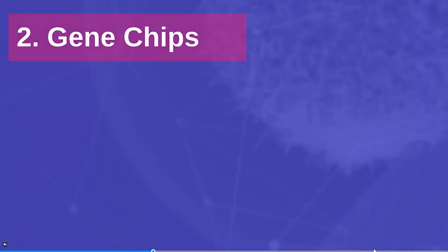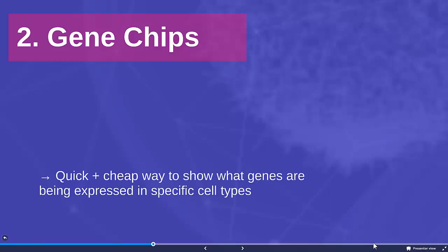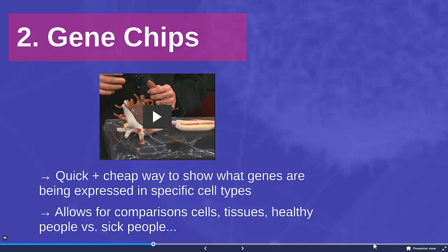Another way to figure out what a gene is doing is using something called a gene chip. This is a really quick, cheap way to figure out which genes are being expressed in specific cells. Gene chips can also be used to compare healthy people and sick people and understand which genes are being expressed in the healthy person versus the sick person — and maybe gene expression is the reason for a particular disease. This video will give you a simplified but good visual for how gene chips might work and how you can see visually quite quickly what's happening in a particular cell, tissue, or person.